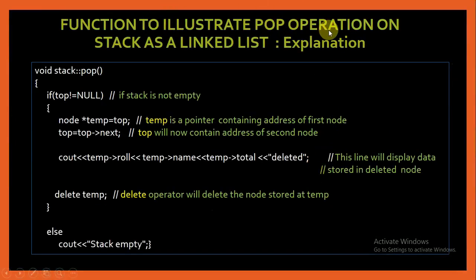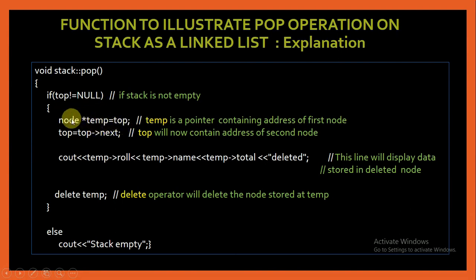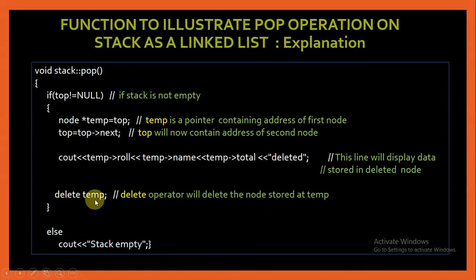Now let us see the pop operation in detail. In the pop operation we check whether top is null or not, because if top is null the stack is empty and we cannot delete any node. If top is not null, we store the address of top in a temporary variable temp of type node, then point top to the next node — top will contain the address of the next node. We display the information about to be deleted, then use the delete operator to delete the address stored in temp, which is the address of the very first node of the stack. The delete operator is very important because if a node was created with new, it must be deleted using delete.